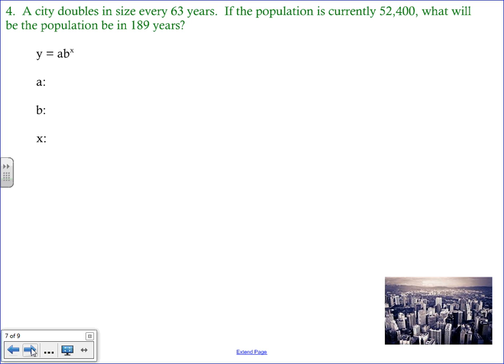All right, our last example. We are dealing with the population of a city. So the city doubles in size every 63 years. If the population is currently 52,400, what will be the population in 189 years? So doubles. There's our multiplier. B is going to be 2. And this represents growth because our B value is greater than 1. We are starting with 52,400 people.